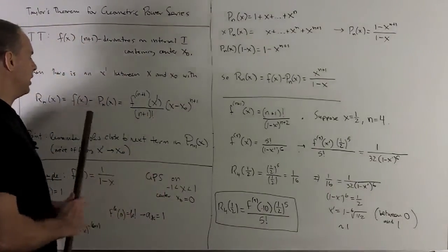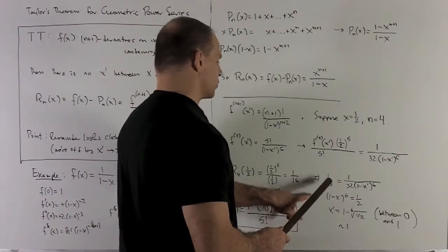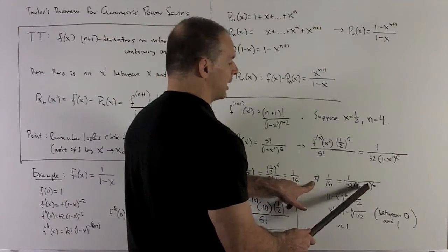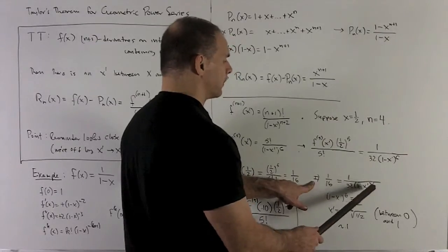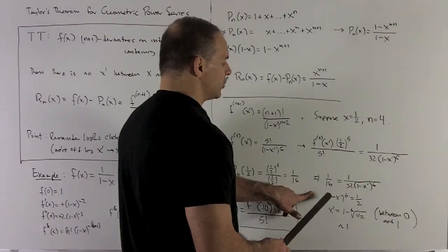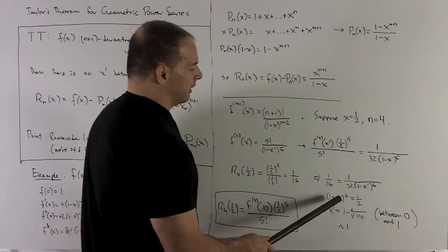Now I'm going to set this thing equal to this thing, solve for x prime. So that's going to give me 1 over 16 equals 1 over 32 times 1 minus x prime to the sixth power. We push things to the other side to get them above in the numerator, so it's going to be 1 minus x prime to the sixth is equal to a half.